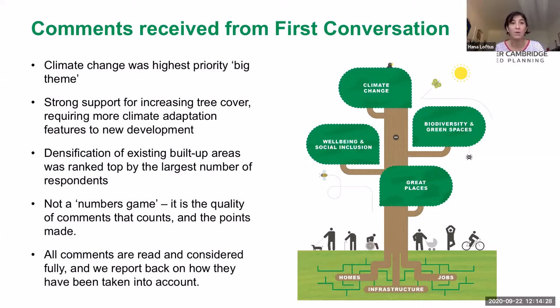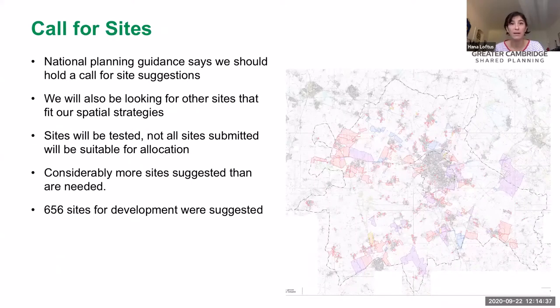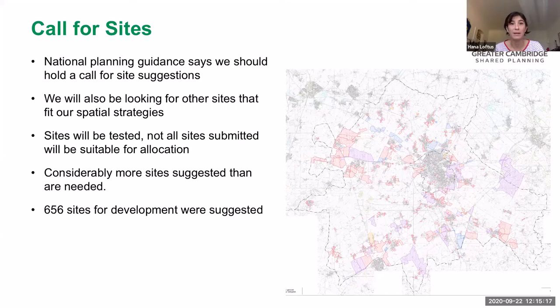On the call for sites: national planning guidance says we should hold a call for site suggestions exercise, but we also look for other sites that fit our spatial strategies. It's not just about picking from the pool of submitted sites — we look for other sources of housing and employment land supply too. All sites get rigorously tested through a process that ends up in a Housing and Employment Land Availability Assessment, which will be a lengthy report published next year. Many more sites have been suggested than we actually need, so there will be a lot of narrowing down over the coming months.